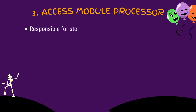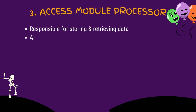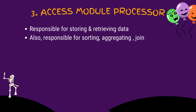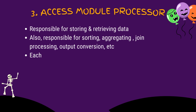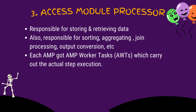The third topic — Access Module Processor, also called AMPs: These are responsible for storing and retrieving data to and from the disk or virtual disk. They are also responsible for sorting rows, join processing, aggregating columns, and output conversions. This is one of the main parts of Teradata architecture.